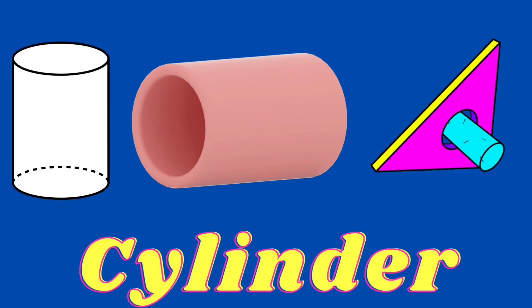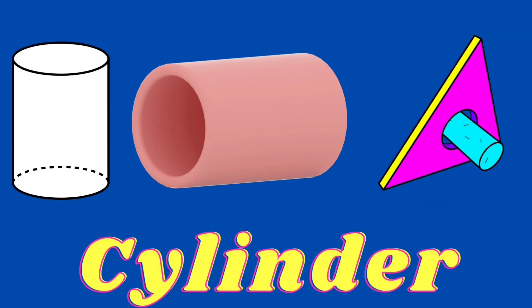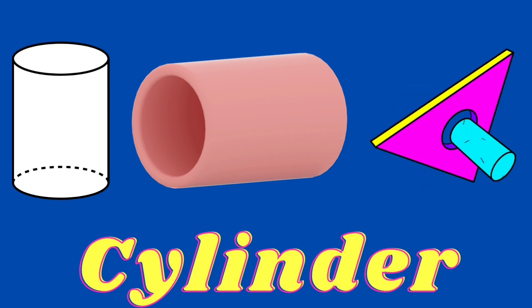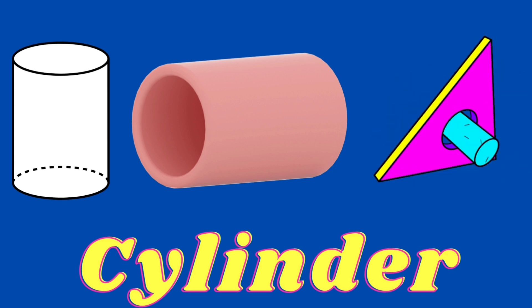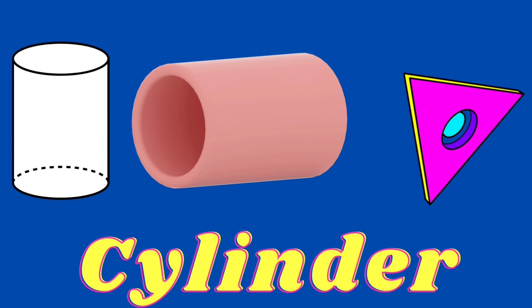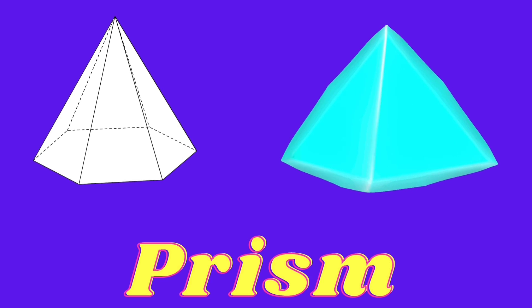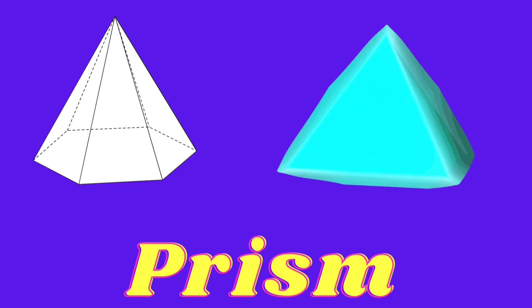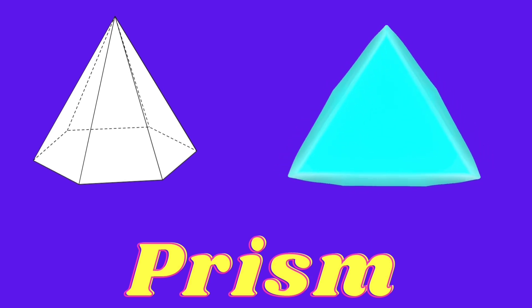Cylinder. This is a cylinder and it is also a three-dimensional structure. This is a prism — it is a solid structure bound on all its sides by plane faces.